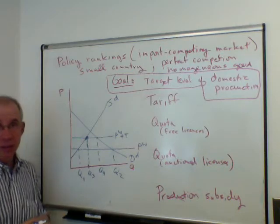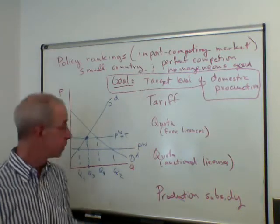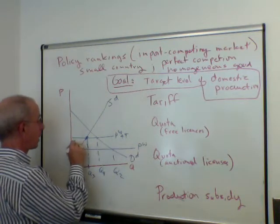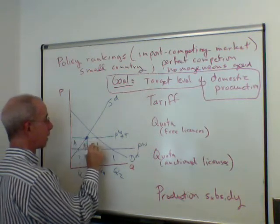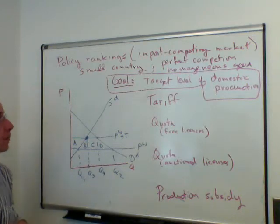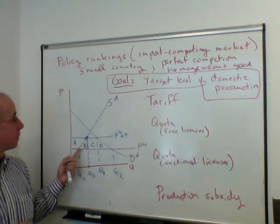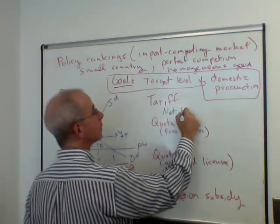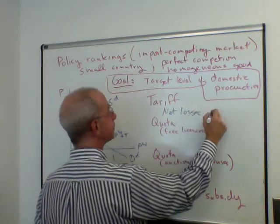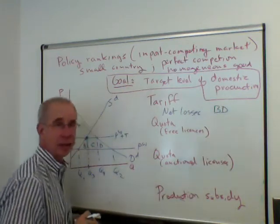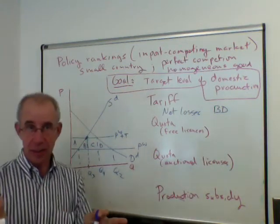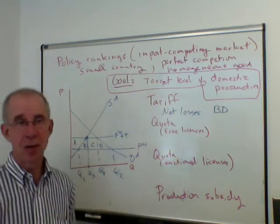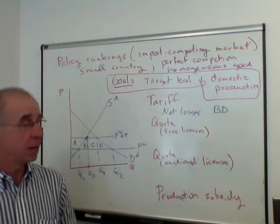The tariff does reduce domestic consumption from Q2 to Q4. As outlined in a separate video, the net losses of the tariff to the economy are areas B and D — that's after taking into account the effects on consumers, on producers, and on government revenue.